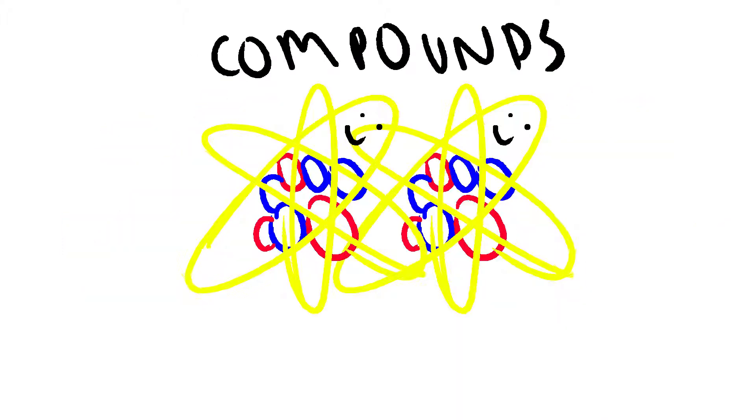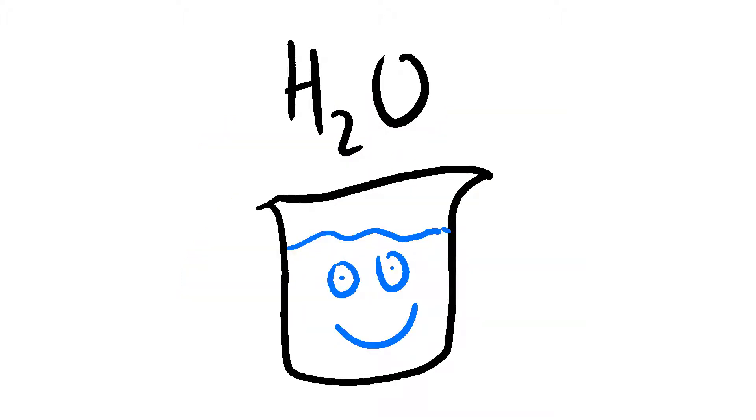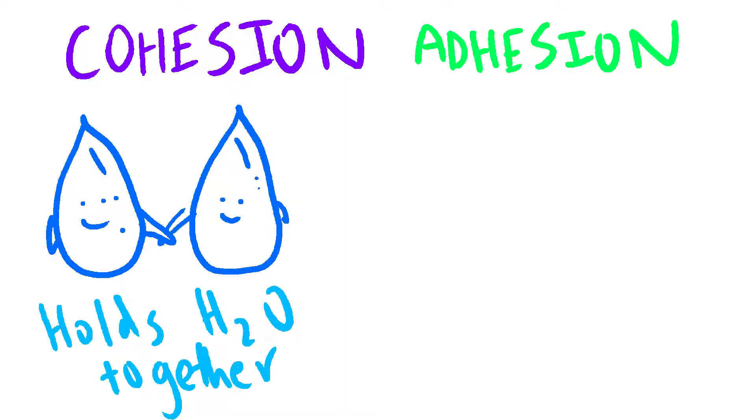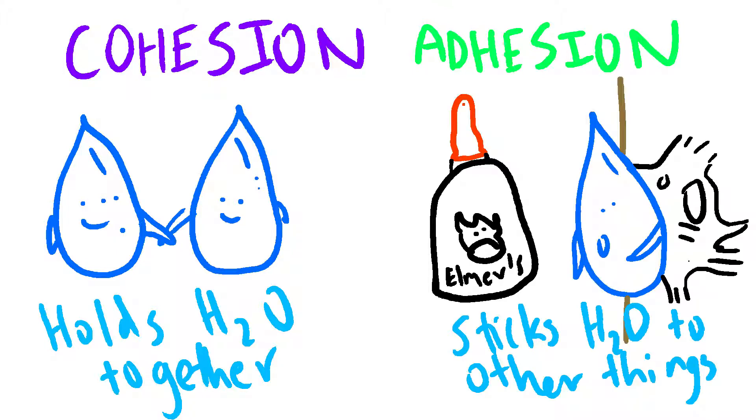Elements also come together to form compounds, an important one of which is water. Two of water's most important properties are cohesion and adhesion. Cohesion is like cooperation, which means together. It holds water molecules together. Adhesion is like a glue or an adhesive. You use it to glue one thing to another. Adhesion causes water to stick to the side of graduated cylinders and beakers.